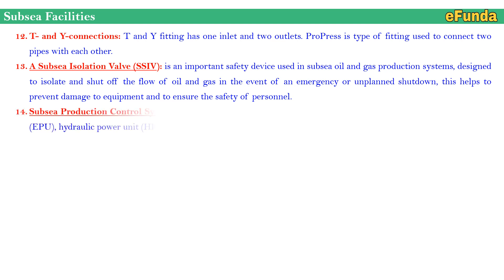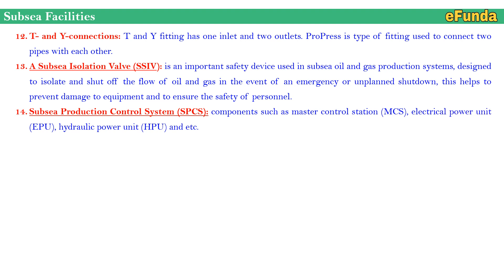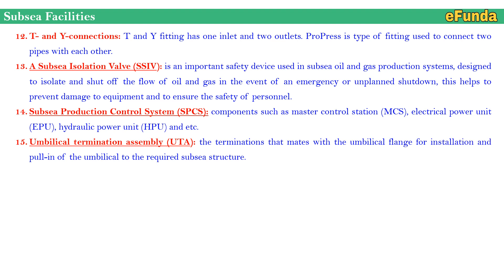The SSIV helps prevent damage to equipment and ensures the safety of personnel. Fourteenth, subsea production control system (SPCS) components such as master control station (MCS), electrical power unit (EPU), hydraulic power unit (HPU), and others are connected. Fifteenth, umbilical termination assembly (UTA) — termination that meets with the umbilical flange for installation and pull-in of the umbilical to the required subsea structure.